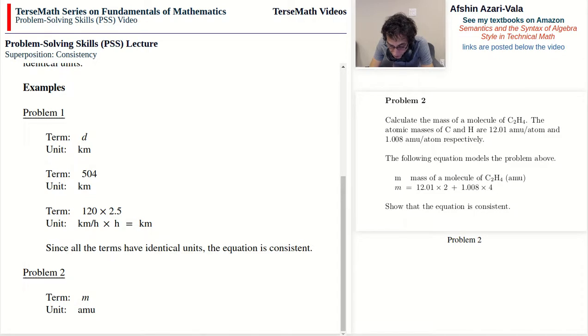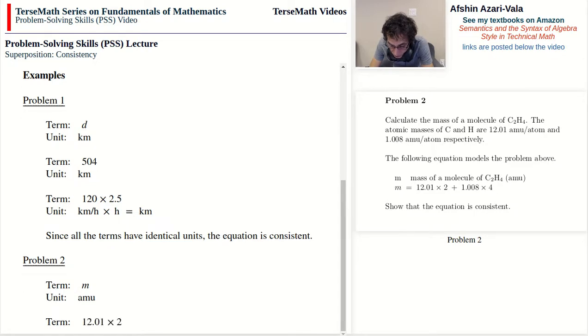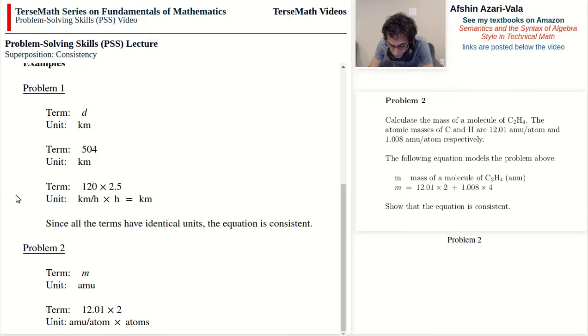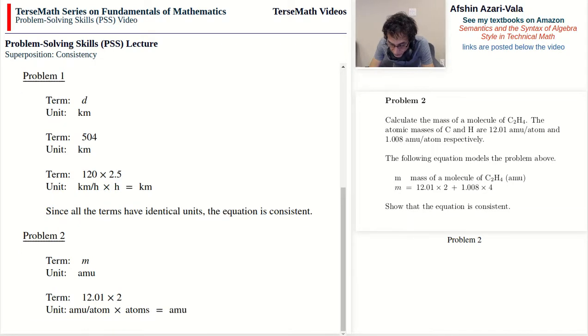The next term is 12.01 times 2, and for this one we're going to take the units. For 12.01, the unit is amu per atom. Again, you can see it here. And 2 is of course the number of carbon atoms. And therefore it's amu per atom times atoms. And again the atoms cancel out and the final unit becomes amu.